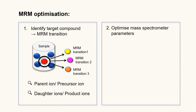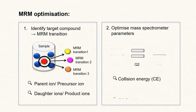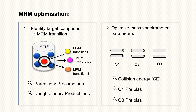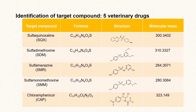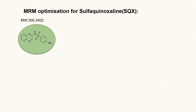Thereafter, mass spectrometer parameters such as collision energy, Q1 pre-bias, and Q3 pre-bias have to be optimized to achieve the best result. To begin setting up a method for detection of veterinary drugs in LC-MS-MS, basic information including formula, structure, and molecular mass are listed. The following diagram shows the MRM optimization process of the veterinary drug sulfaquinoxaline.